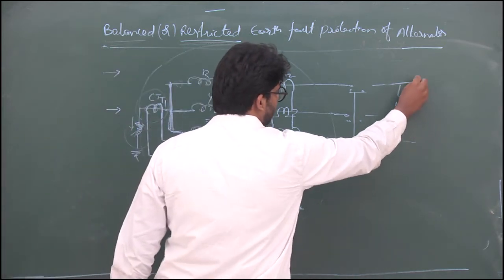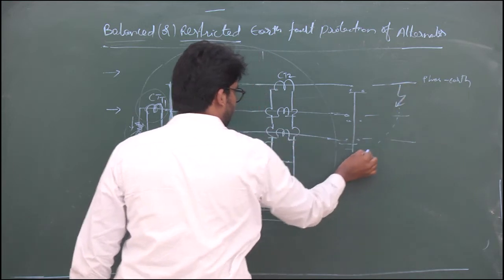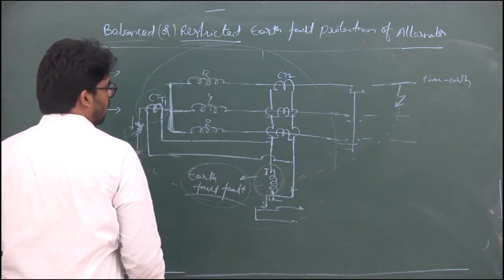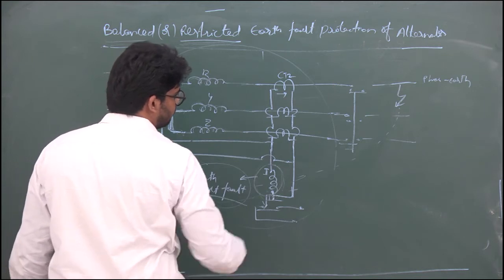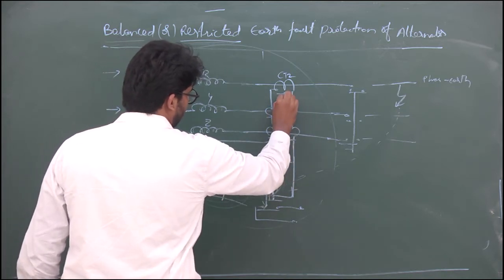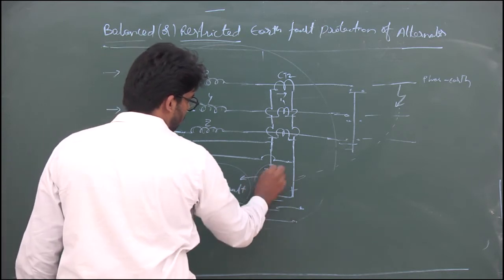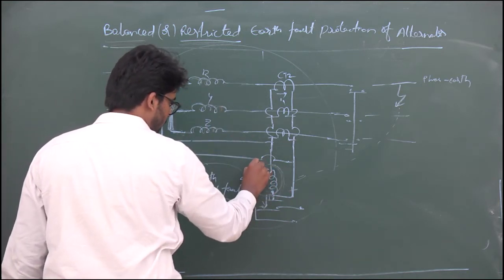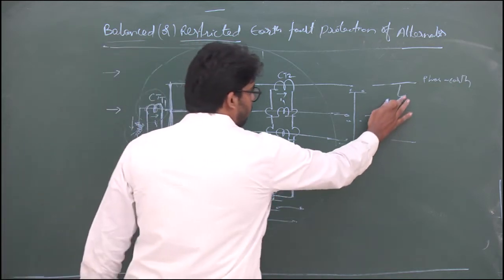If an external fault occurs — a phase-to-earth fault occurs externally — there is a fault current flowing. In this direction, there is a fault current, and the current will circulate. For example, this is I1 current and this is I2 current. There is no current going to the relay coil because the current I2 will be equal to whatever current flows in each section — therefore I1 minus I2 equals zero, and the coil will not get excited.